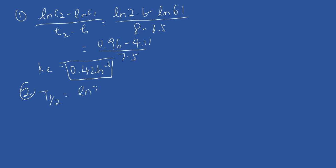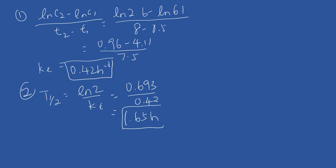For question number two, the half-life for elimination: t-half equals ln 2 divided by ke, that is 0.693 divided by 0.42. The half-life of elimination should be 1.65 hours.